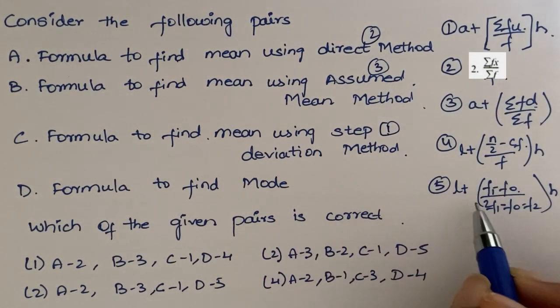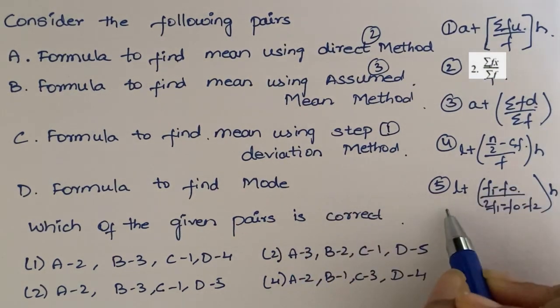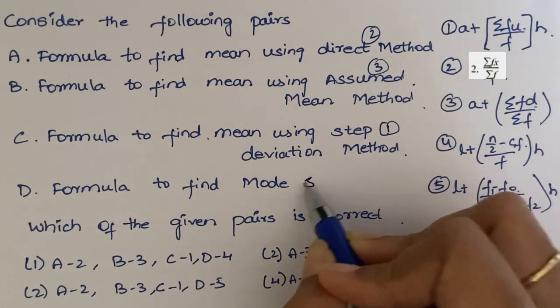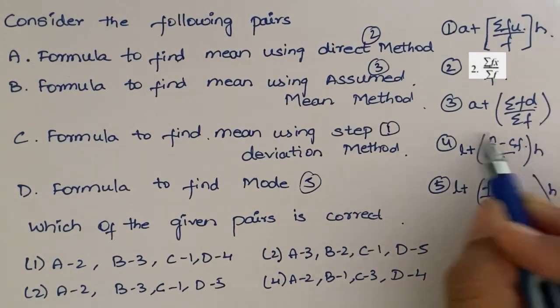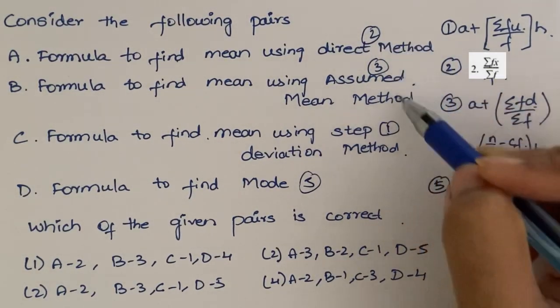Next. Find the mode. Mode formula we already know. So, this fifth option is the formula for mode. But here there's another formula given. This is nothing but formula to find the median. So, the options are 2, 3, 1, 5.